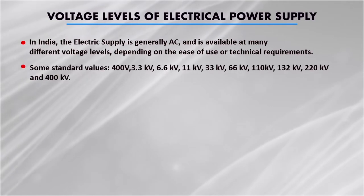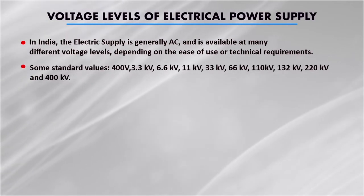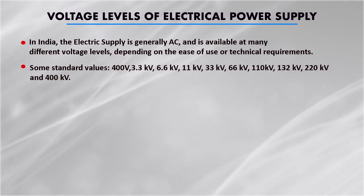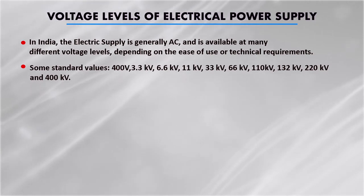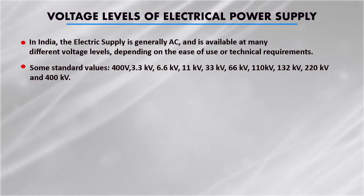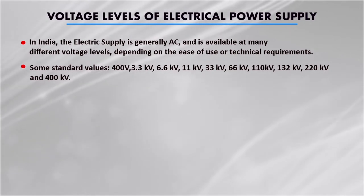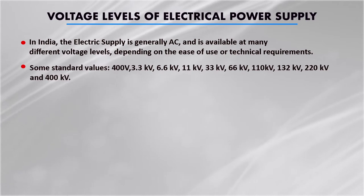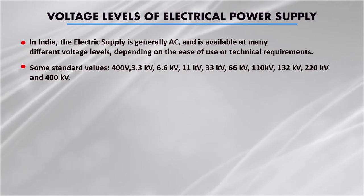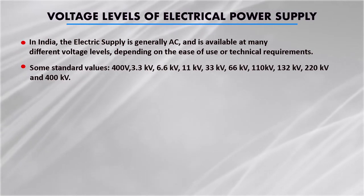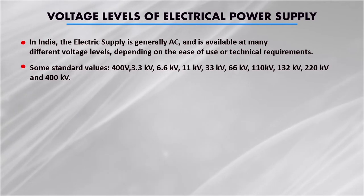The line voltage in these cases is always the voltage between any two phases. The various standard voltage levels are: 400 volt, 3.3 kV, 6.6 kV, 11 kV, 33 kV, 66 kV, 110 kV, 132 kV, 220 kV, and 400 kV. You have heard about all these voltage levels when we discuss power transmission and power distribution.